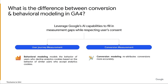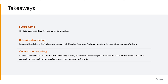Now that we've talked about both behavioral modeling and conversion modeling, you might be wondering what is the difference between the two. Behavioral modeling aims to restore measurement for session and user metrics that are unobservable when users deny analytics cookie storage — models are trained on observable data from users who have granted proper consent. Whereas conversion modeling was built to model for cases where conversion events cannot be deterministically connected with previous engagement events — models are trained on observable data to provide more accurate reporting on how conversions should be attributed across channels. The key takeaways are: the future is consented, first-party, and modeled. Behavioral modeling can help you gain useful insights from your analytics reports while respecting your users' privacy. And conversion modeling can help you recover as much loss in observability as possible by training data on the observed space to model for cases where conversion events cannot be determined or connected with previous engagement events.